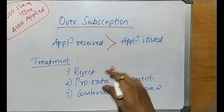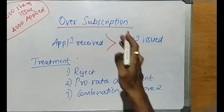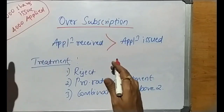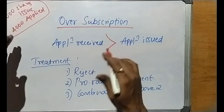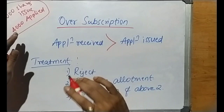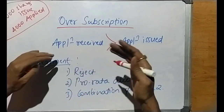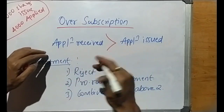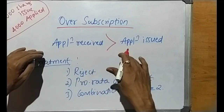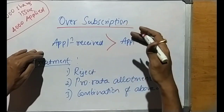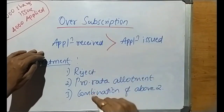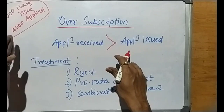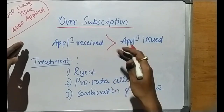In this session, we will try to understand the concept of over-subscription, which is completely opposite to under-subscription. Here, the company receives an excess number of applications — more applications than the shares it issues to the public.